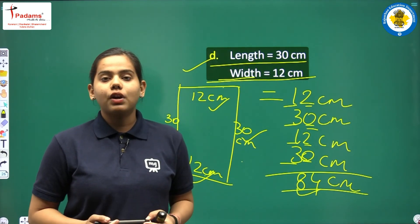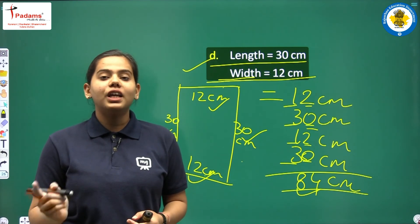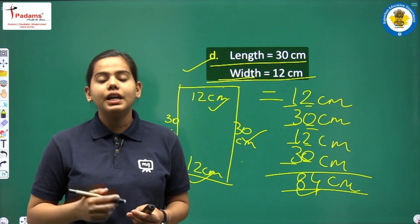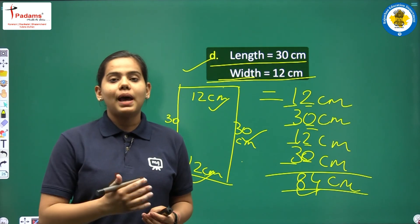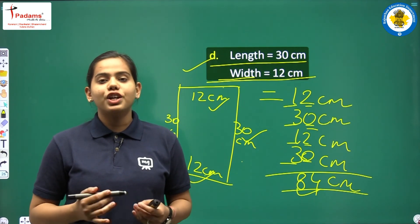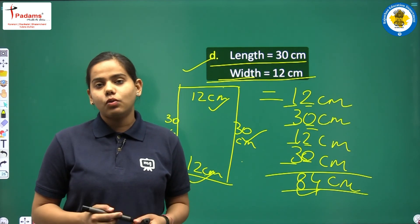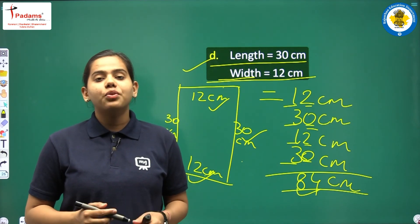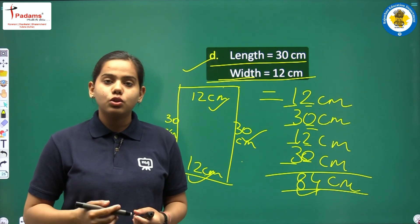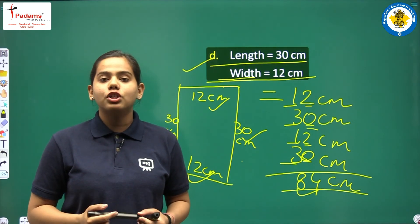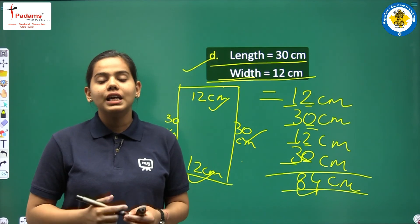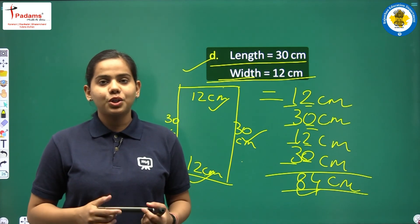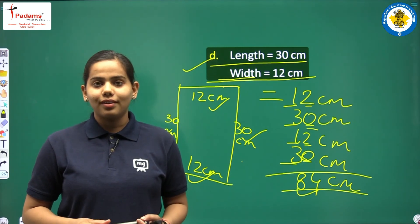Children, here we have completed exercise number 14, question number 1 and 2, where we have practiced the area and perimeter of different figures — both regular and irregular shapes. We will meet in the next class where we will solve the remaining questions of exercise number 14 related to area and perimeter. Thank you everyone. Keep learning, keep growing.